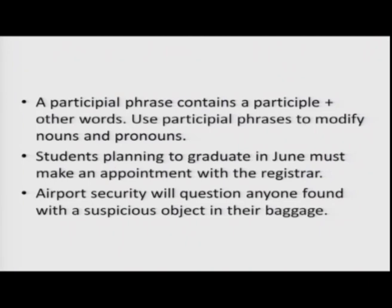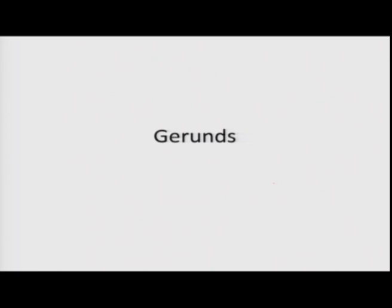We use participial phrases to modify nouns and pronouns. For example: 'Students planning to graduate in June' — 'planning to graduate' modifies 'students.' 'Airport security will question anyone found with a suspicious object' — 'found with a suspicious object' modifies 'anyone.' Closely related is the gerund. Gerunds also have '-ing' in them, but they are different from participles — gerunds are nouns made from verbs by adding '-ing.'